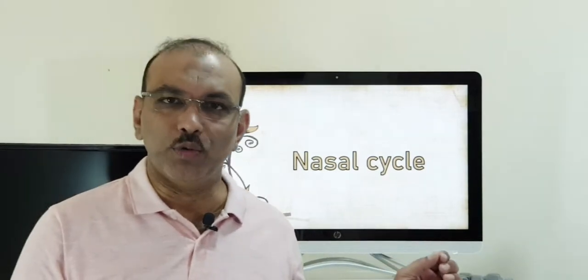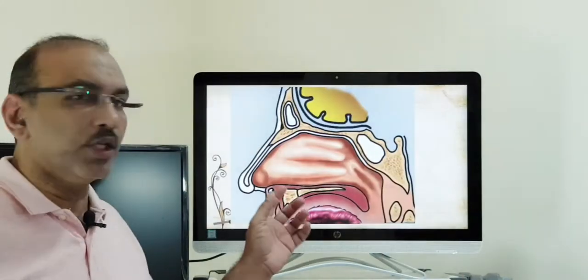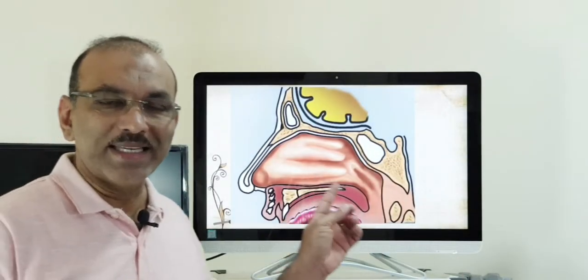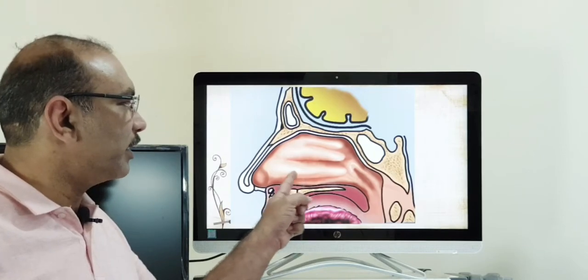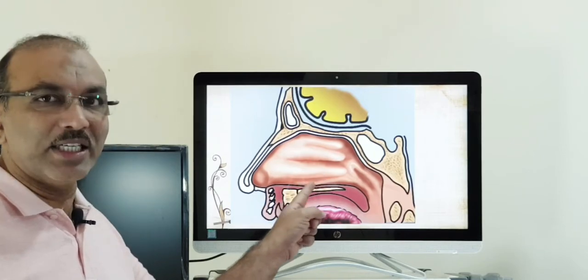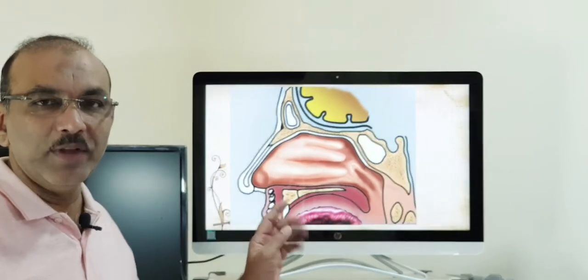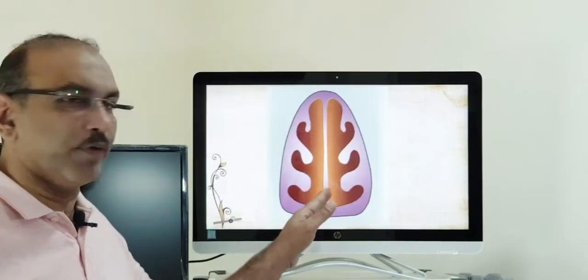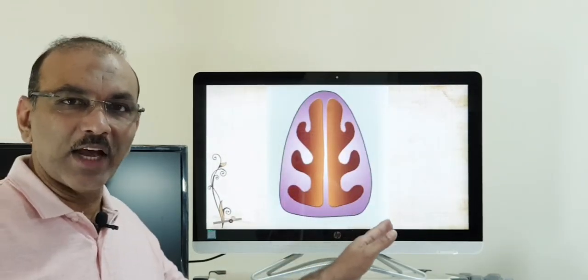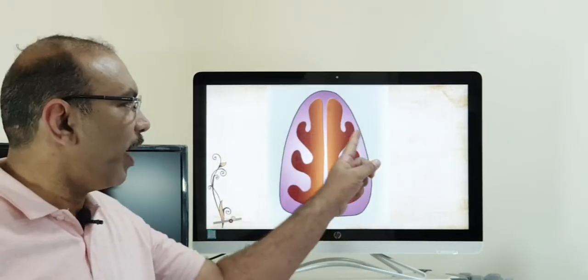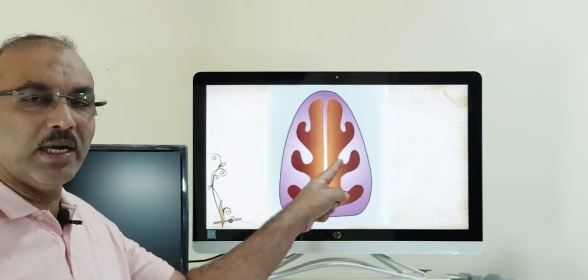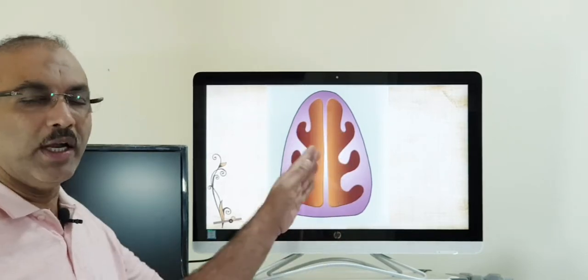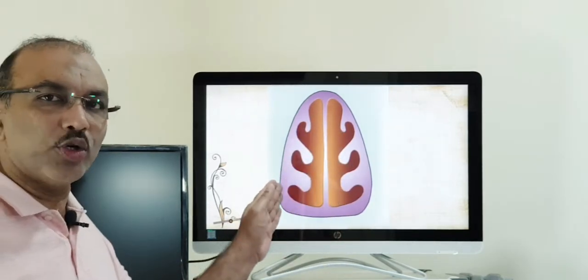Let me show you the structure of the nose. Inside the nose, you have turbinates. There are three turbinates on each side. This is the side view and this is the front view. On each side of the nasal cavity, you have the inferior turbinate, the middle turbinate, and the superior turbinate, and the same structure exists on the other side as well.